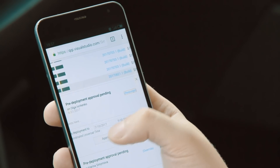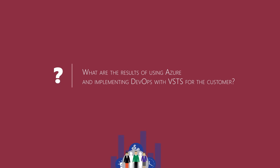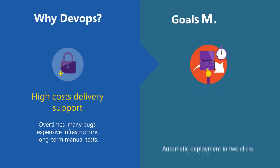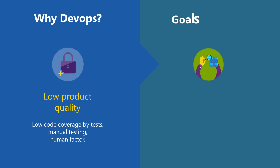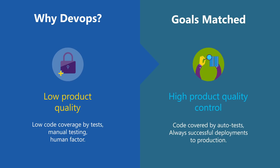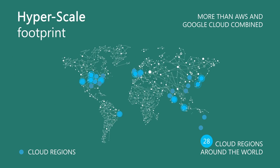As a result, we now have a fully automated product release process for all landscapes and different audiences. The customer can change the team at any time, but this process will continue to work. Azure provides a wide range of tools for me and the DevOps team to monitor the current state and the ability to optimize the use of Azure resources, which reduces the cost for the customer.